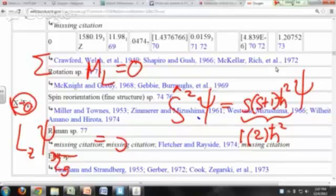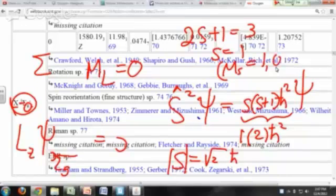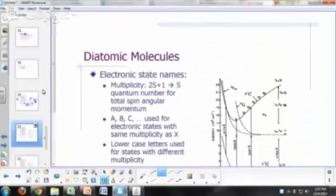So S squared is two H bar squared, so S would be square root of two H bar. If it's a triplet, two S plus one equals three, so S must be equal to one. The reason it's a triplet is because M sub S can be one, zero, or negative one. The degeneracy because of spin is three when S equals one.